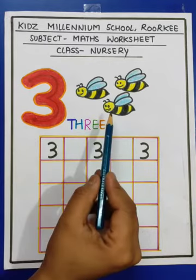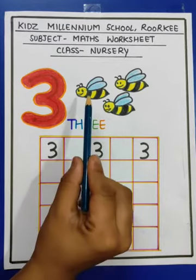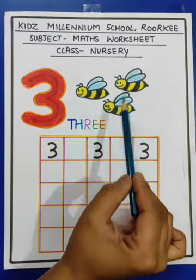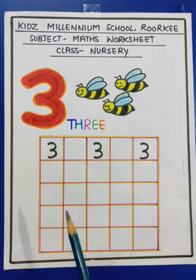Here are 3 honey bees. Count them. 1, 2, 3. 3 honey bees.